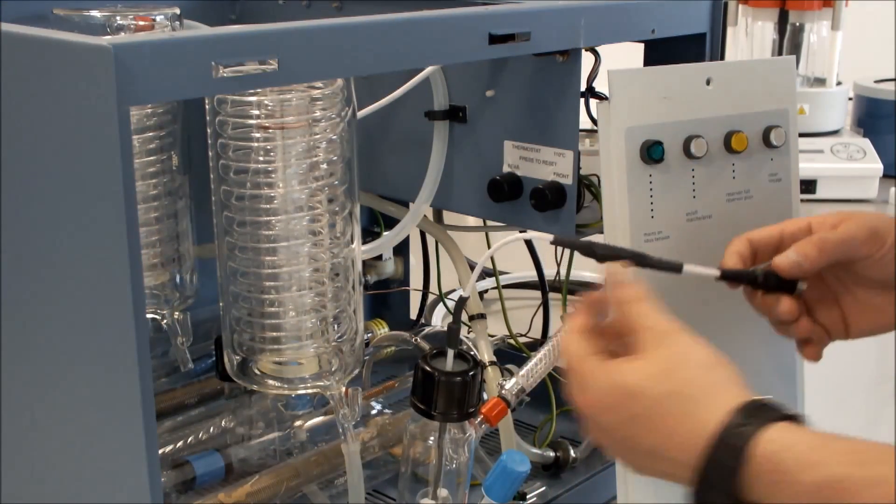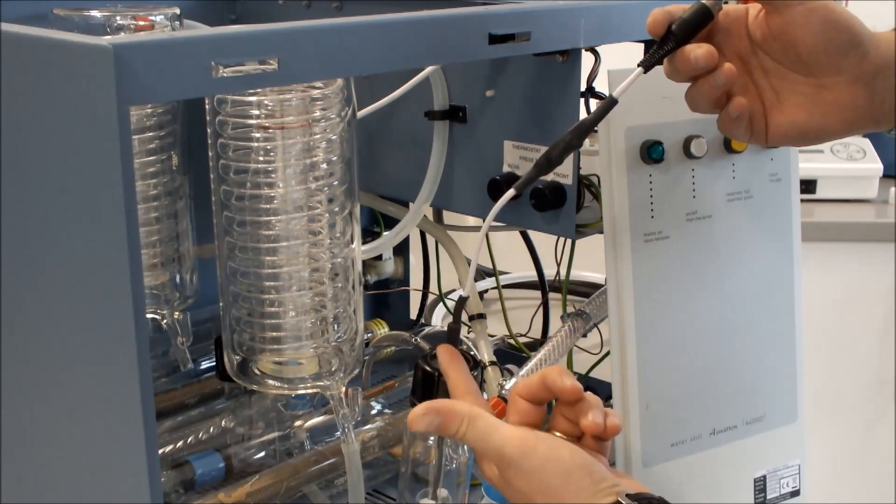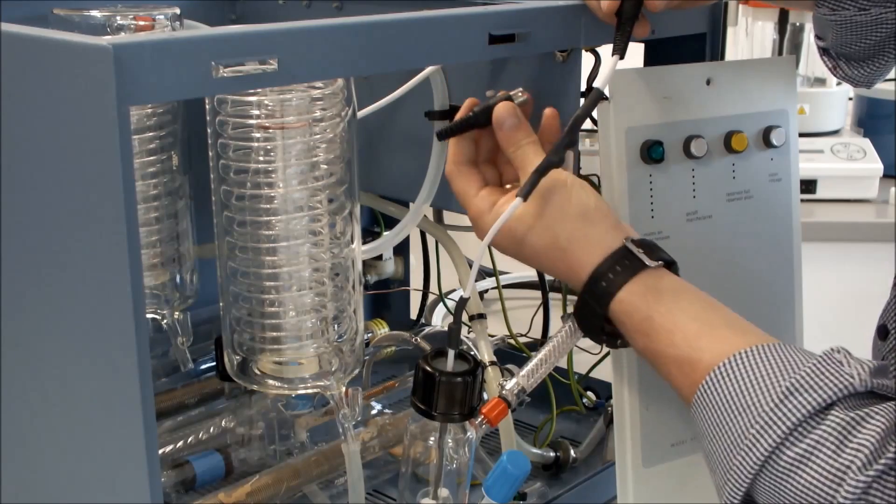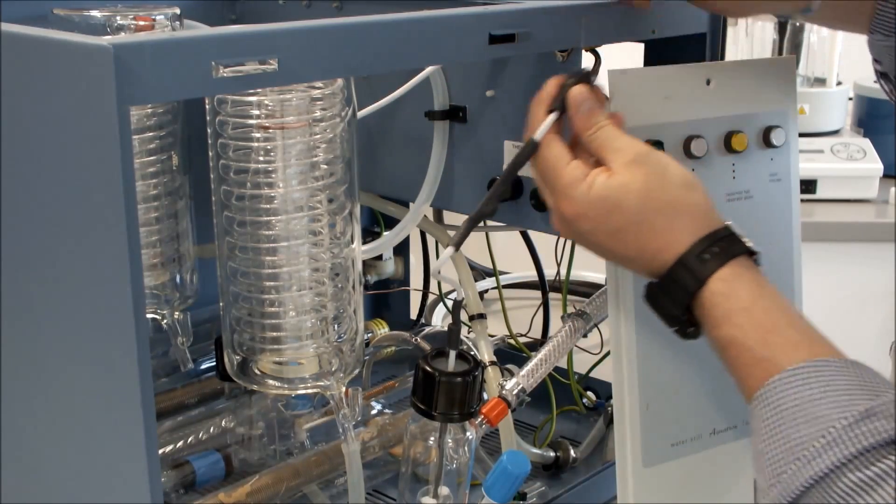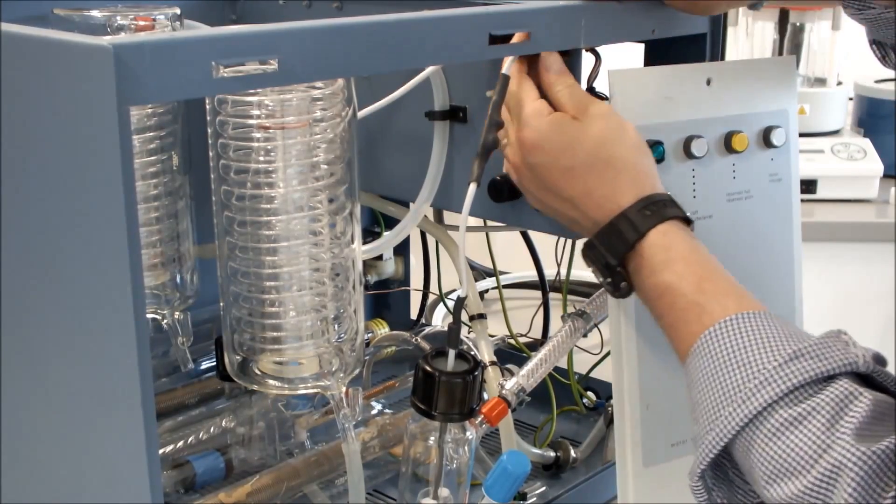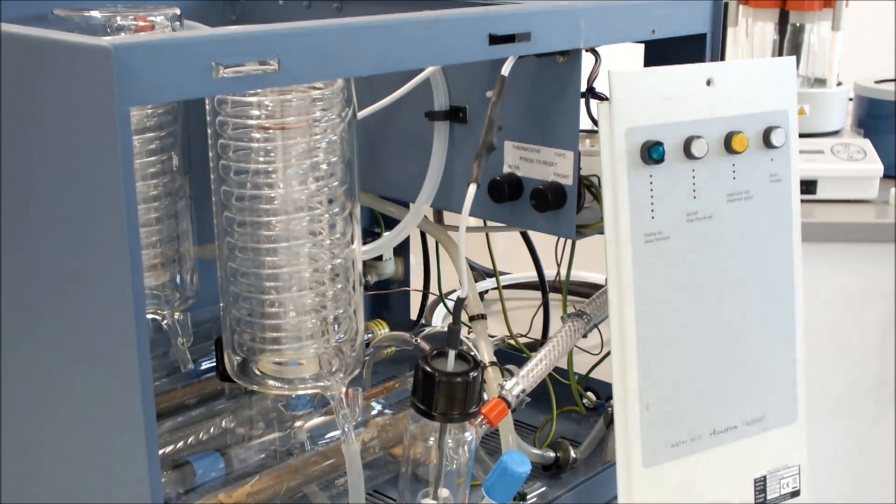We then connect our plug to our float level assembly. First of all we take the blanking plug off and then fit the plug to the connector.